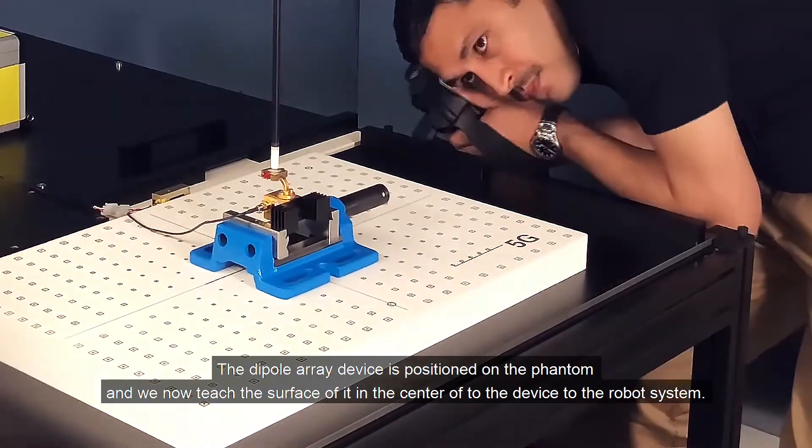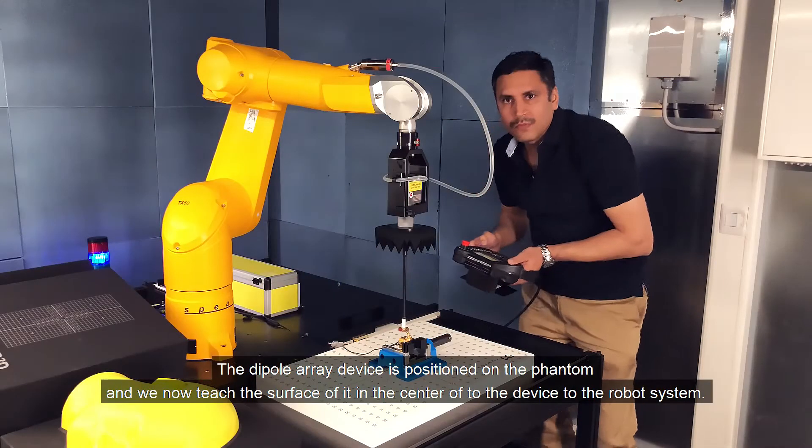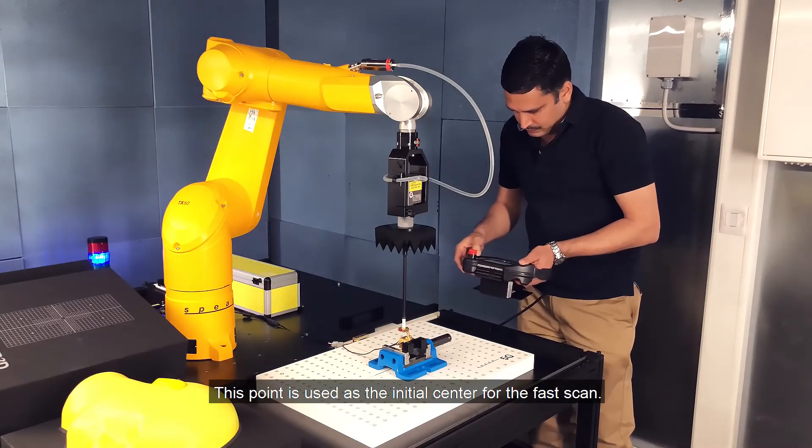The dipole array device is positioned on the phantom and we now teach the surface of it in the center of the device to the robot system. This point is used as the initial center for the fast scan.